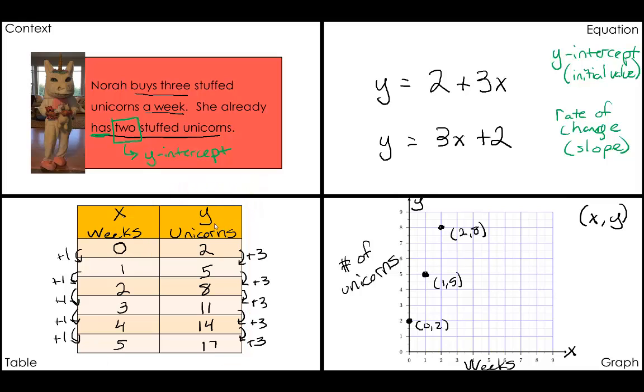In our table, looking when x is 0 at the very beginning, this gives us our y-intercept. We have 2 when x is 0, so this is the y-intercept.